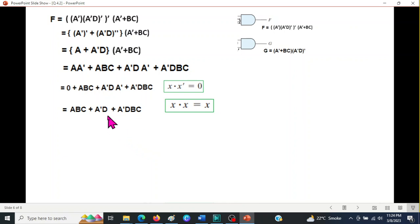Now we can take A'D common from these two. Taking A'D common, we have 1 + BC. And we can use this formula: X + 1 = 1, or 1 + X = 1. Same thing. And this will become equal to 1. So this is our answer.